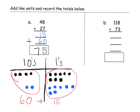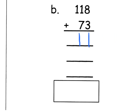Let's do this next problem. We have eight ones plus three ones — that gives us eleven ones. And I've got one ten plus seven tens — that gives us eight tens, so that's eighty.